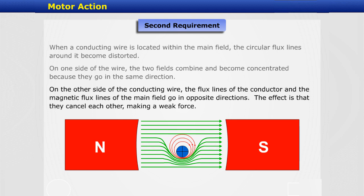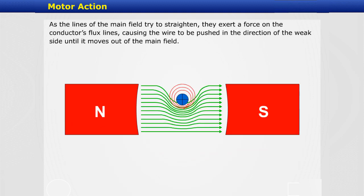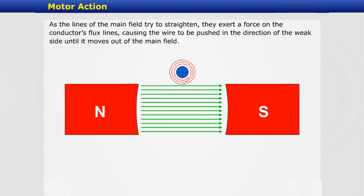On the other side of the conducting wire, the flux lines of the conductor and the magnetic flux lines of the main field go in opposite directions. The effect is that they cancel each other, making a weak force. The distorted lines of the main field on the side of the wire that is concentrated are elastic like a rubber band. As the lines of the main field try to straighten, they exert a force on the conductor's flux lines, causing the wire to be pushed in the direction of the weak side until it moves out of the main field.